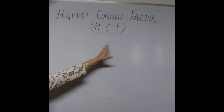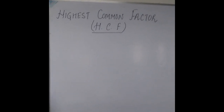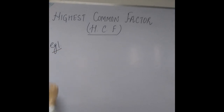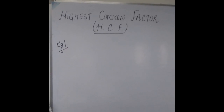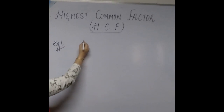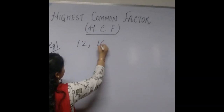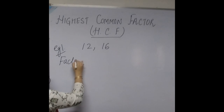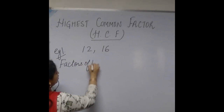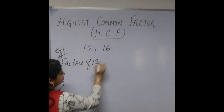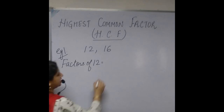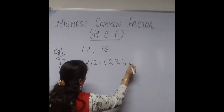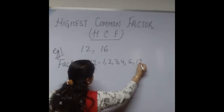Let us look at this with the help of one example. Let us find the Highest Common Factor of 12 and 16. We have the two numbers 12 and 16. First of all we have to write the factors of 12. I hope you know how to find the factors of 12. The factors of 12 are 1, 2, 3, 4, 6, and 12.